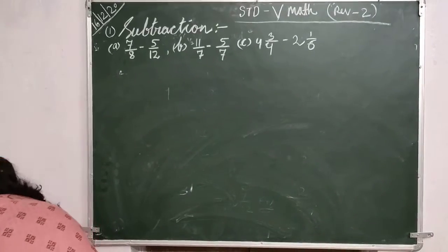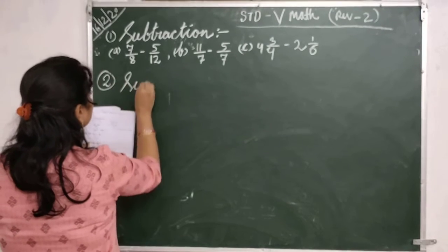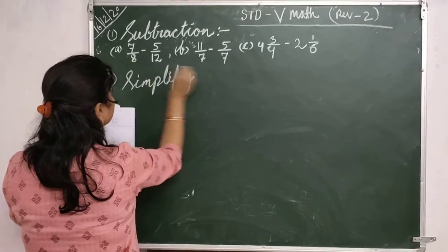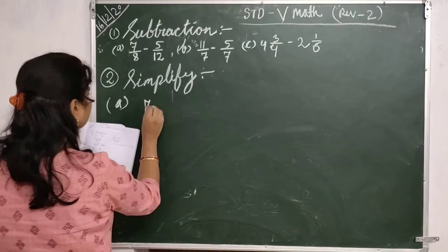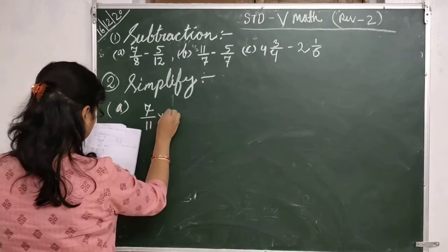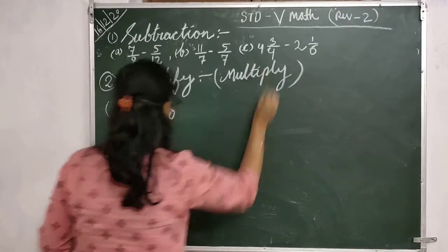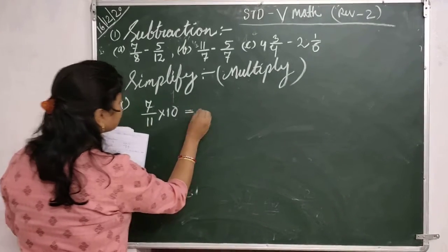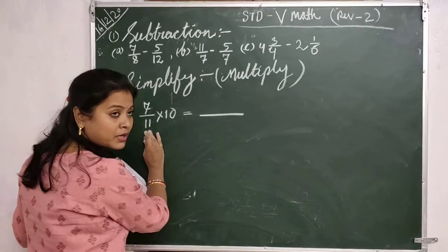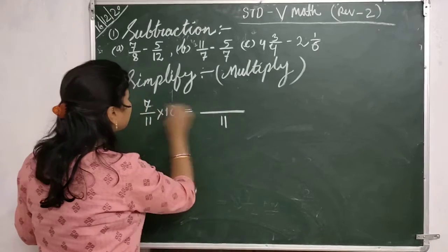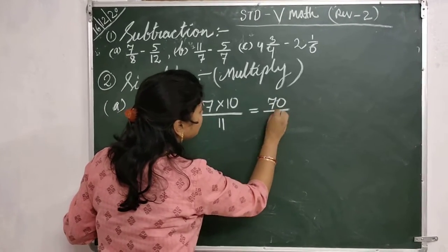Children, you now have some more questions — simplify. The next question is multiplication. Here we have to multiply 7 by 11 into 10. This is a fractional number and 10 is a whole number. You have to write the denominator the same, so the denominator is 11. Here 7 multiplied by 10 gives 70, so your answer will be 70 by 11.